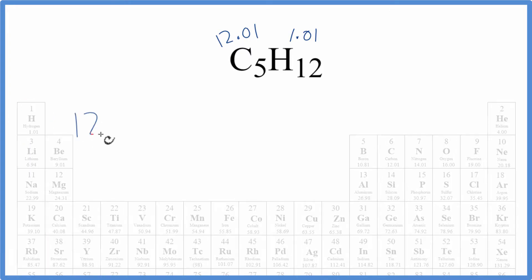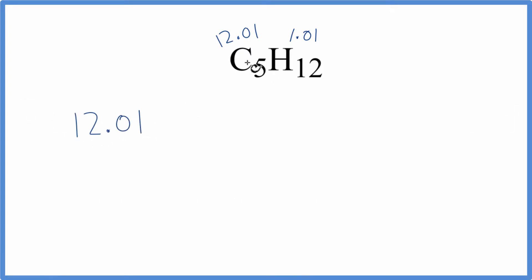So we take 12.01, and we have 5 carbons. So we need to multiply that by 5, plus hydrogen is 1.01, and we have 12 hydrogens. So we multiply that by 12. We do that.